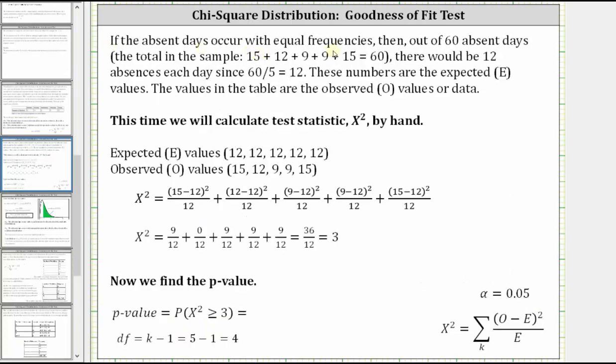If the absent days occur with equal frequencies, then out of 60 absent days, again the sum of the absent days in the table is 60, then there would be 12 absences each day since 60 divided by five is equal to 12. These numbers are the expected values, or E, in the formula.